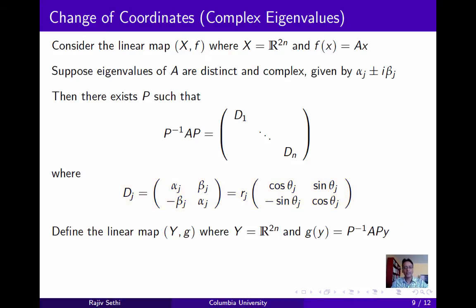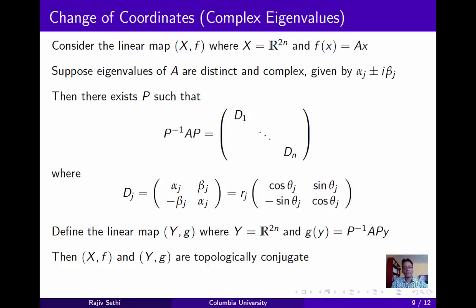Define the linear map (Y, g), where again Y is equal to R to the 2n, and g(y) is equal to this block diagonal matrix multiplied by y. This second dynamical system (Y, g) is much simpler than the first, because it consists of n separate two-dimensional systems, where subsystem j is described by the 2 by 2 matrix D_j. Again you can verify that the two systems are topologically conjugate, so we can deduce the properties of the first by looking at the properties of the second.